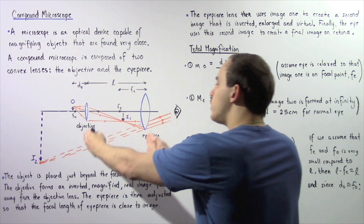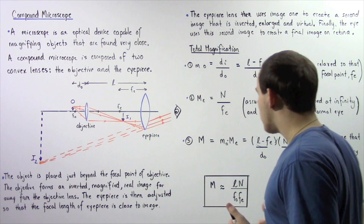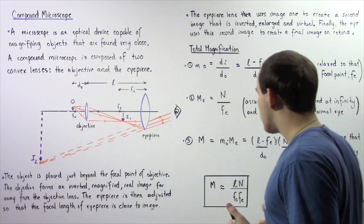So the total magnification is approximately equal to L — the distance between the two lenses — multiplied by N, the near point of the eye (assumed to be 25 centimeters), divided by the product of the focal lengths of each of the two lenses.